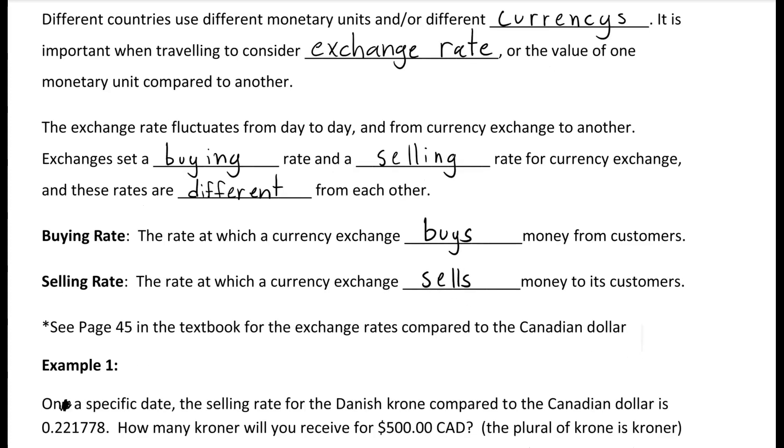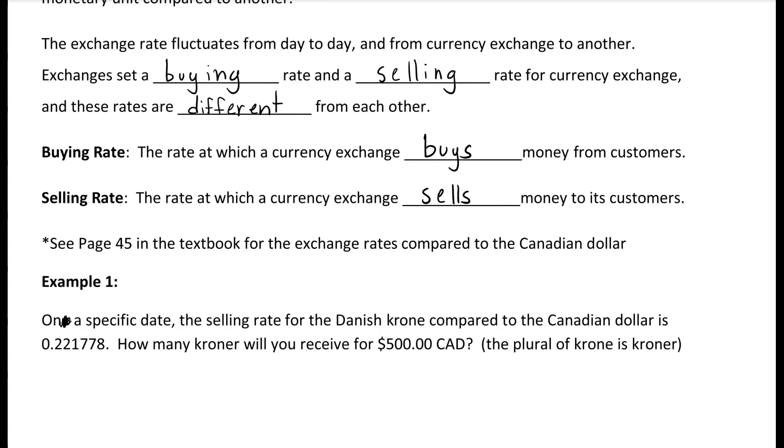A buying rate is the rate at which the currency exchange buys money from the customer. So if you were selling it to the bank, it's what they're going to buy it from you at. A selling rate is the rate at which currency exchange sells money to its customers. So if you're in another country and you need to exchange your money for a different currency, you'd be looking at the selling rate.